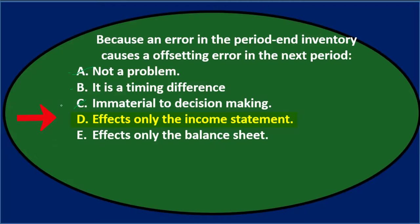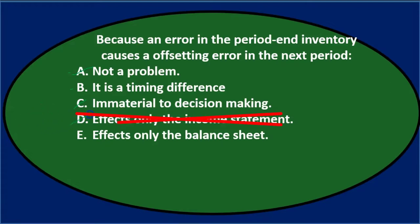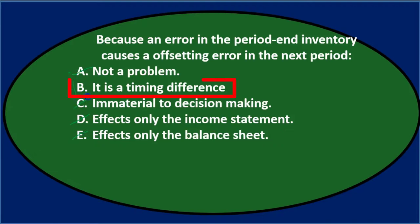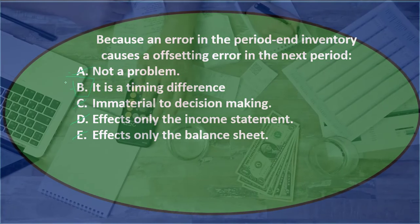D — affects only the income statement — it doesn't, because it affects both the income statement through cost of goods sold and the balance sheet through inventory. E — affects only the balance sheet — same reason, it affects both. So the answer is B — because an error in period-end inventory causes an offsetting error in the next period, it is a timing difference. The difference will reverse itself over time, but can still be a problem within those periods.